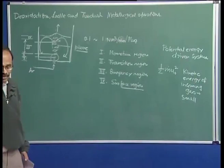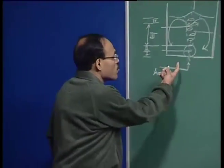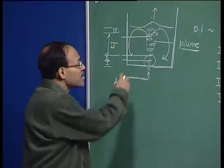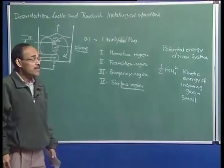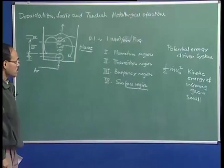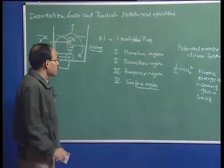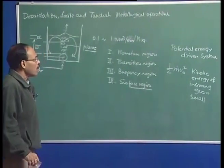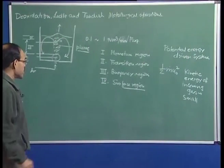For example, in an oxygen steelmaking converter — OBM, where we have bottom-blown oxygen steelmaking where oxygen is introduced through the bottom — that system is certainly not potential energy driven. There, the kinetic energy of the injected gas plays an important role as far as the extent of flow recirculation is concerned, because the gas injection flow rate is very large. Let me now give you an expression of the potential energy and compare both values.